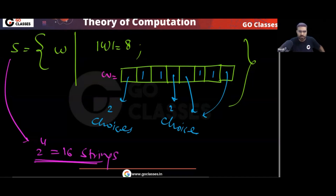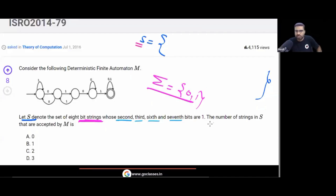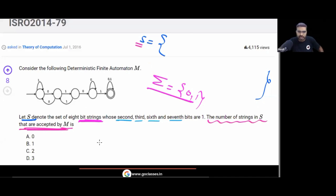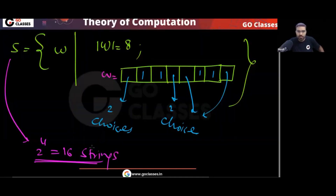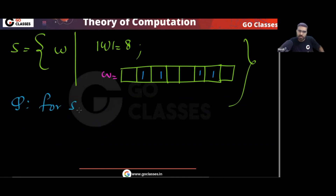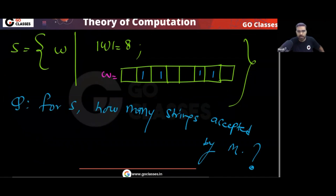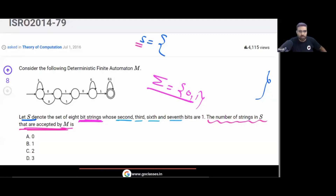What the question is actually asking is: how many of the strings in S are accepted by DFA M? From S, how many strings are accepted by M? This is a straightforward question — let's solve it.